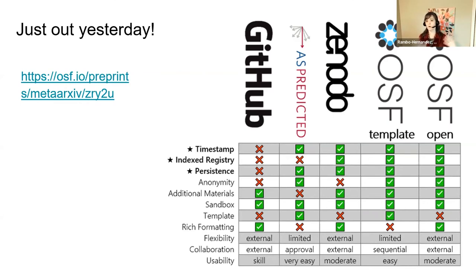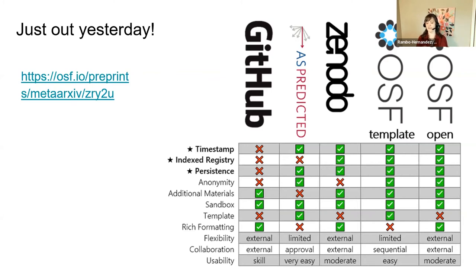Both OSF options allow you to do an anonymized pre-registration — helpful when submitting to a journal so reviewers can see the pre-registration and time stamp without seeing who you are. Both allow you to add additional materials as needed. OSF also has a sandbox that lets you play with pre-registration without making it public — great when teaching students how to do a pre-registration without creating fake entries in your own profile.